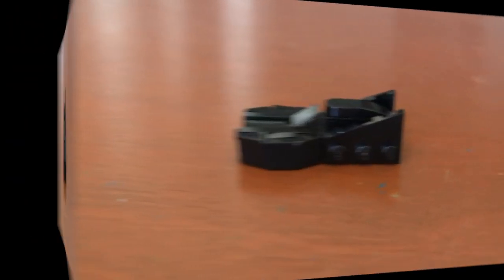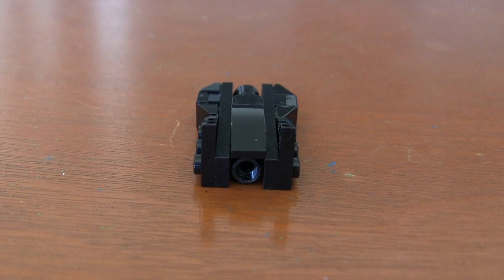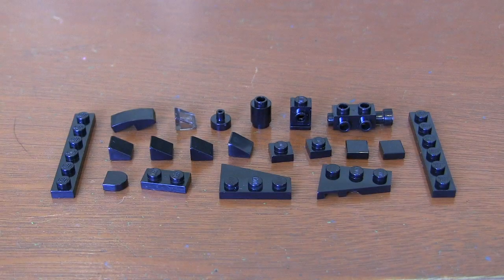Today, we're going to build the 1980s Michael Keaton Batmobile using 20 Lego pieces. These are all the pieces you're going to need.